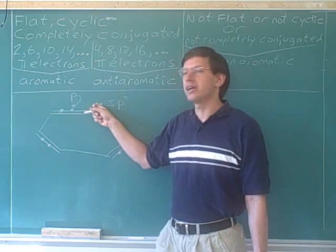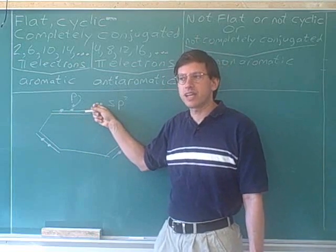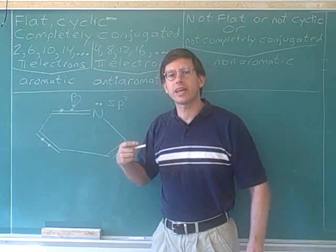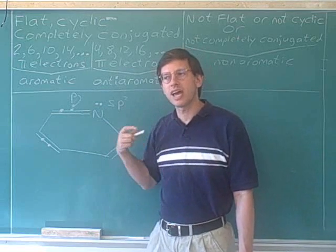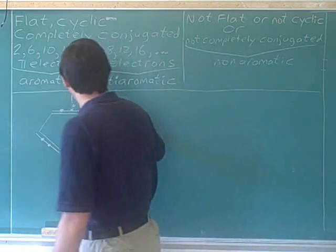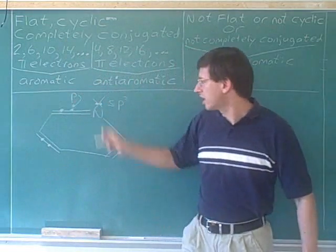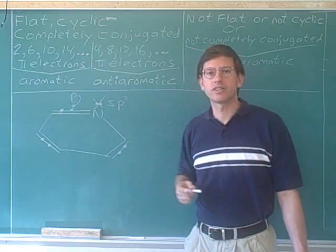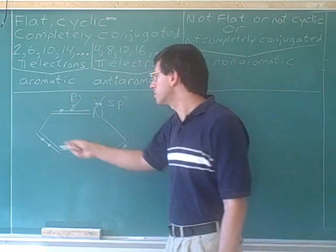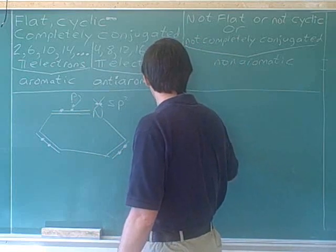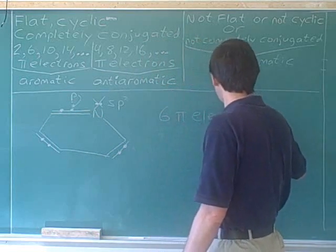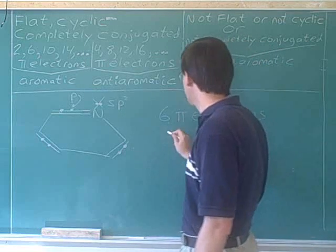Therefore, this lone pair does not count as pi electrons. Remember that pi electrons are only the electrons in side-to-side overlapping p orbitals. Since this lone pair is not in a p orbital, it can't be pi electrons. I'll cross that lone pair out to remind ourselves that those are not pi electrons. So how many pi electrons are there total? One, two, three, four, five, six pi electrons — which means that the molecule is aromatic.